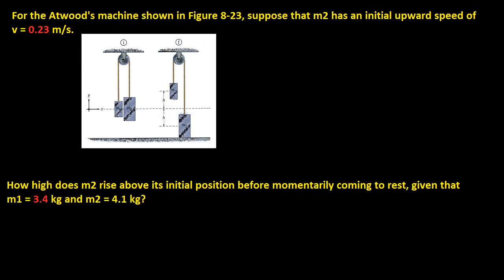Okay, so we have an Atwood machine problem, and it says for the Atwood machine shown in this figure, suppose that M2, which is the heavier one, has an initial upward speed of 0.23.